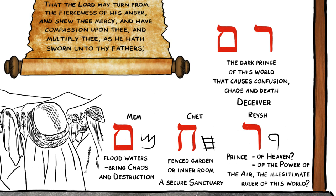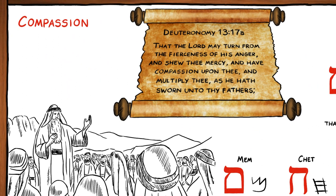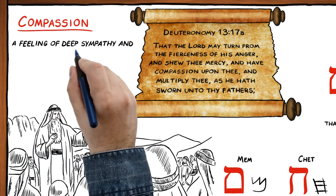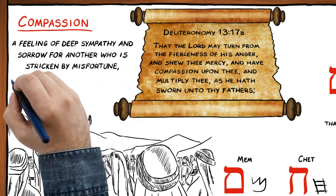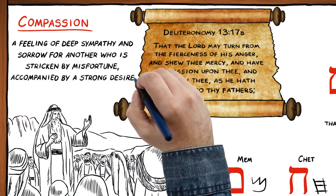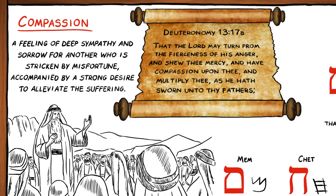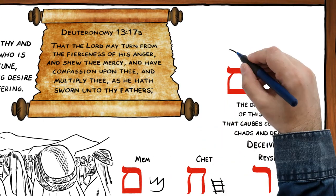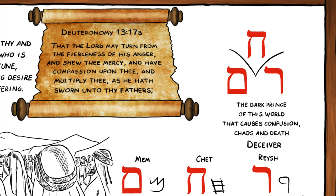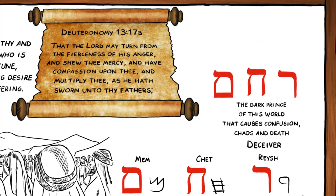So here we have a picture of mankind that is on the pathway that leads to death and destruction. The dictionary defines compassion as a feeling of deep sympathy and sorrow for another who is stricken by misfortune, accompanied by a strong desire to alleviate the suffering. So the question is simply this: where is the compassion in the Hebrew word compassion? The answer is found when you look at the picture letter that the Lord Yod-Heh-Vav-Heh has put between, to separate the prince who has deceived mankind from the chaos and death that will be the natural result of his deception.